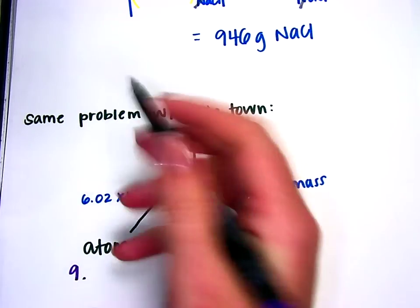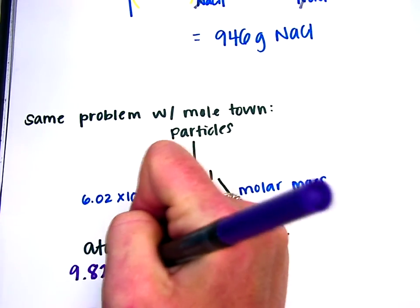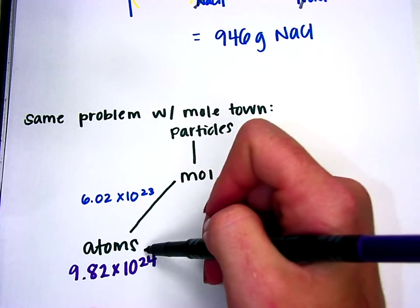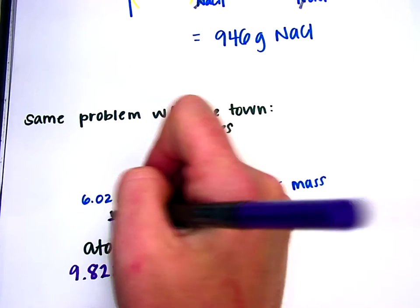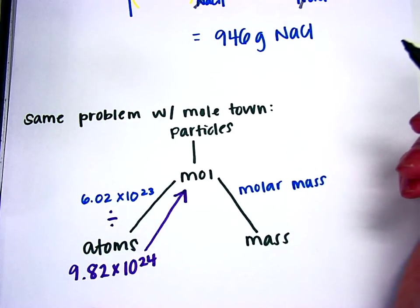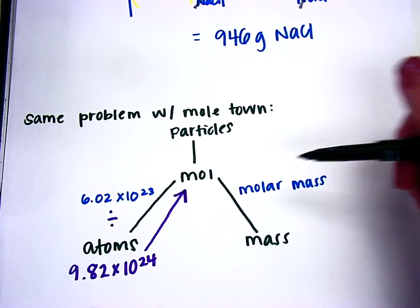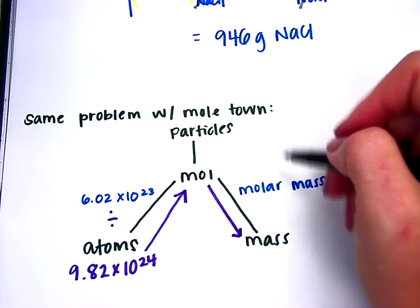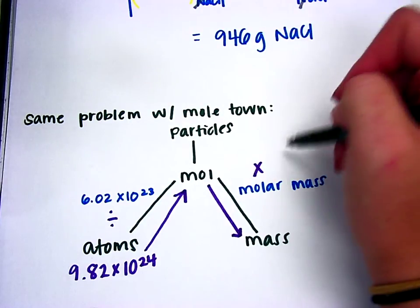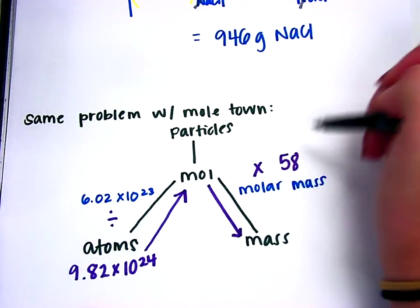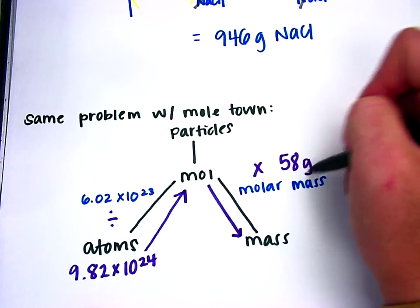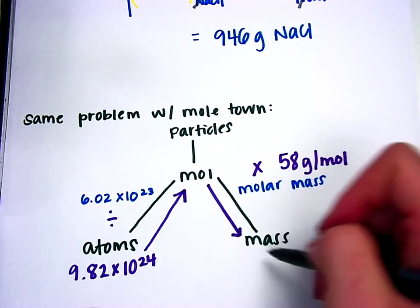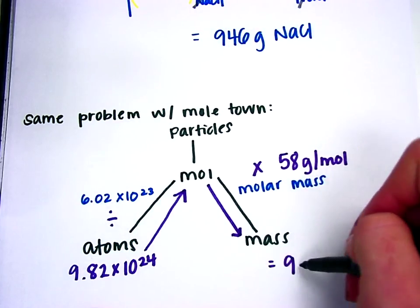So I'll start with my 9.82 times 10 to the 24th, which is my number of atoms. I'll go into town, and since I'm going into town, I will divide by 6.02 times 10 to the 23rd. That gets me to my number of moles. Then I'm going to go from moles to mass, and I'm going to do that by multiplying by the molar mass. The molar mass of salt is 58 grams per mole. So I'll multiply by 58. Then I push enter, and my mass is 946 grams.